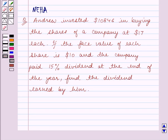Hello and welcome to the session. In this session we will discuss the following question. Andrew invested $10,846 in buying the shares of a company at $17 each. If the face value of each share is $10 and the company paid 15% dividend at the end of the year, find the dividend earned by him.